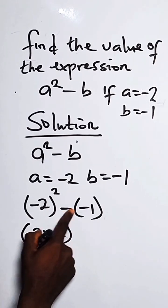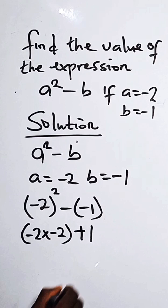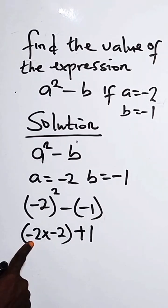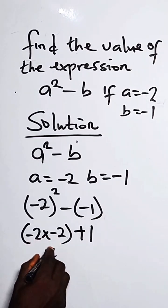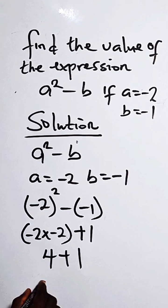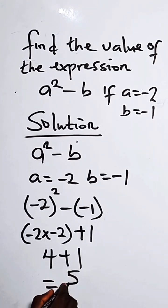Here we have minus times minus, which is plus 1. For minus 2 times minus 2, we have 4 plus 1. When we add this together, we have 5.